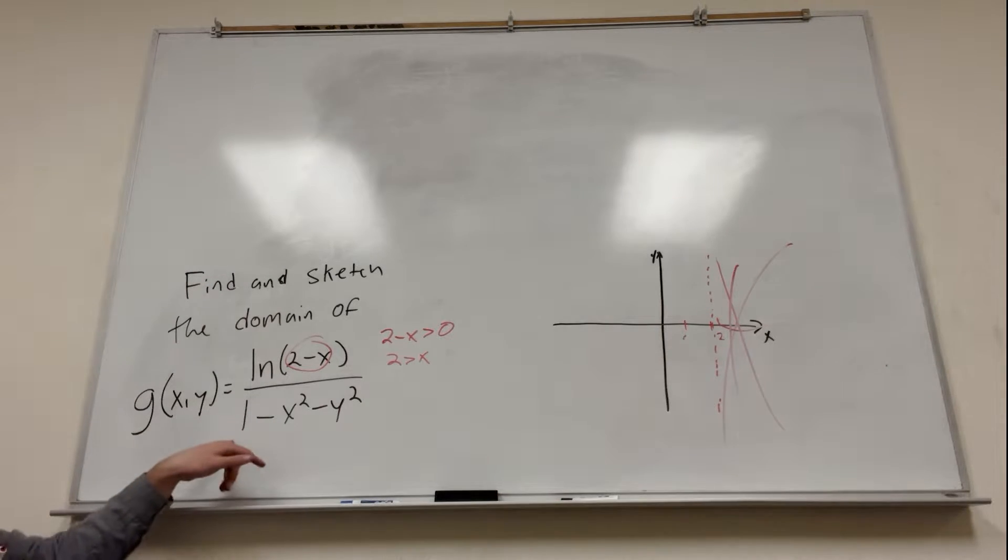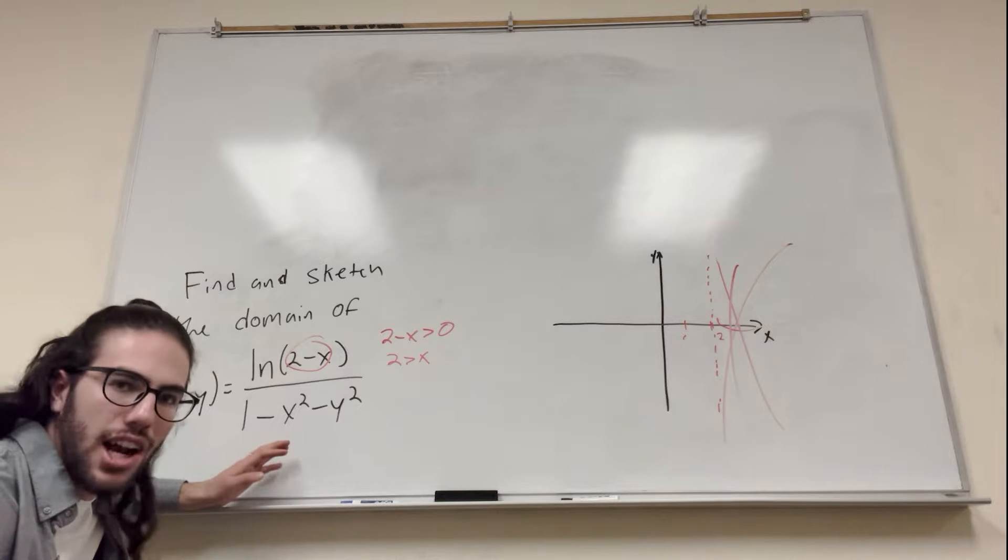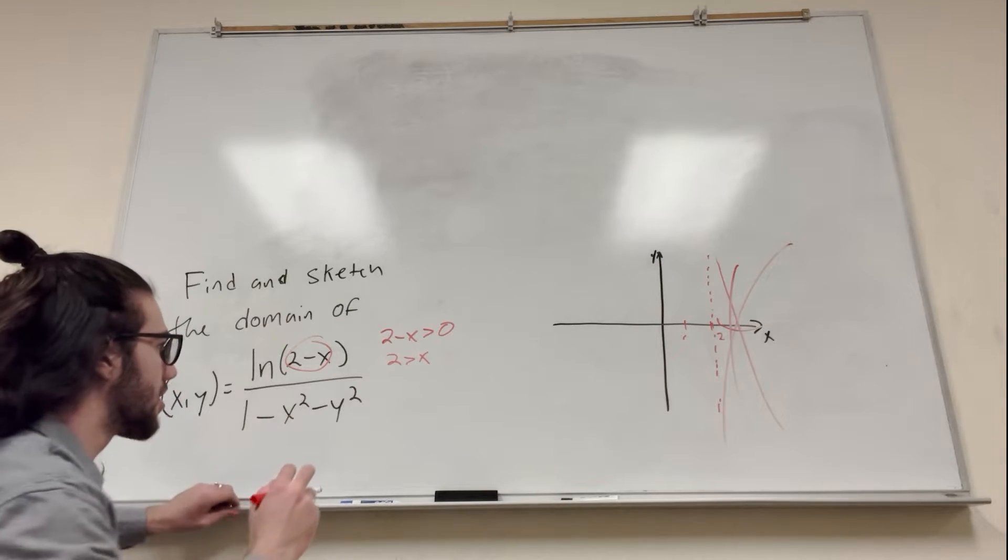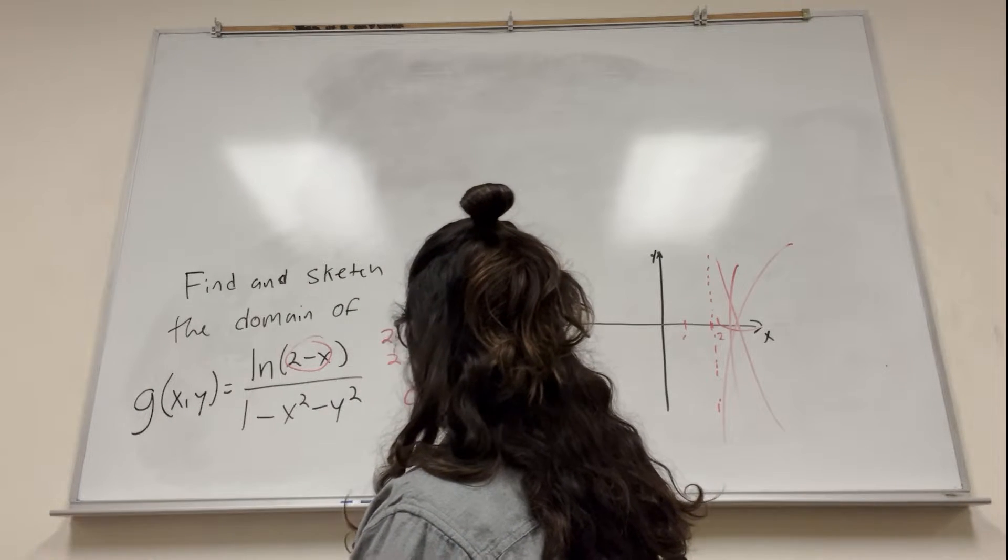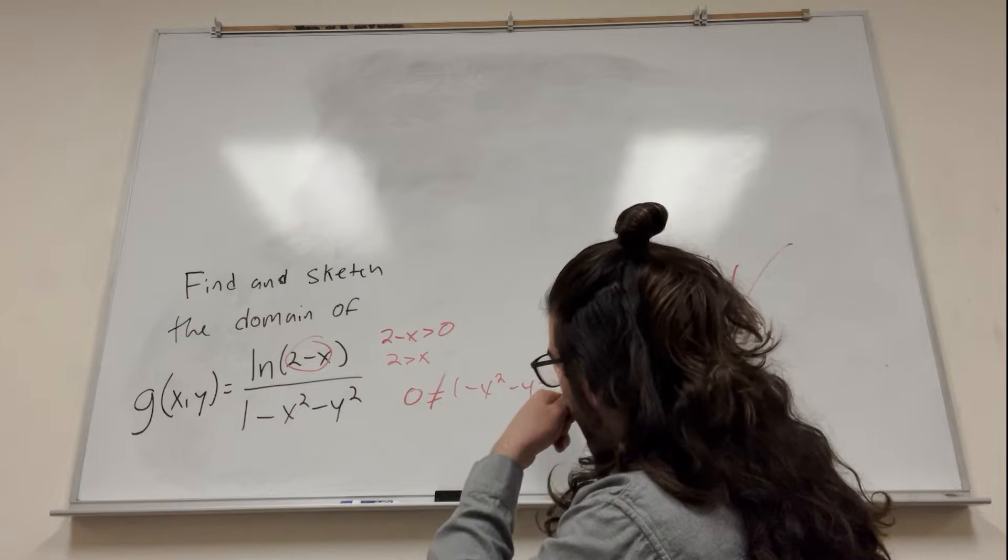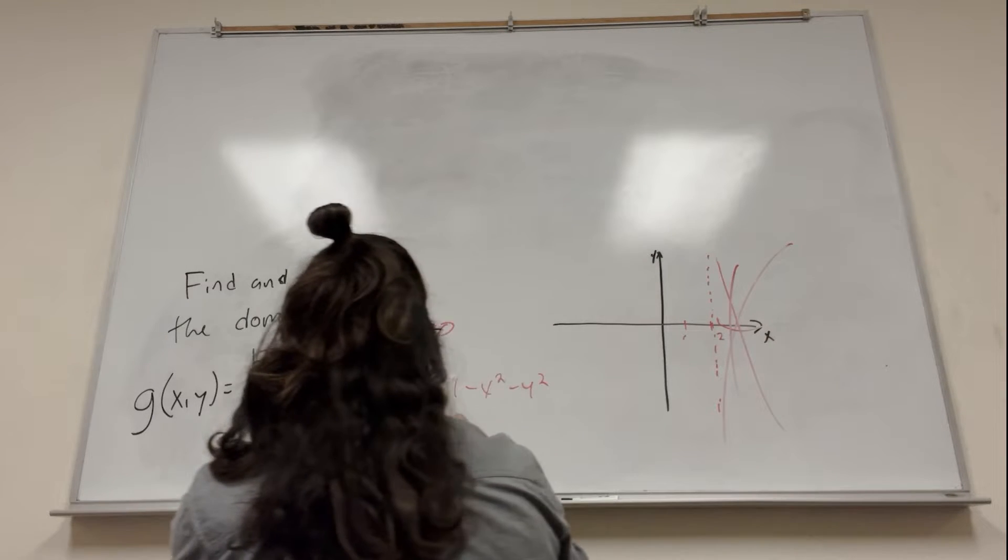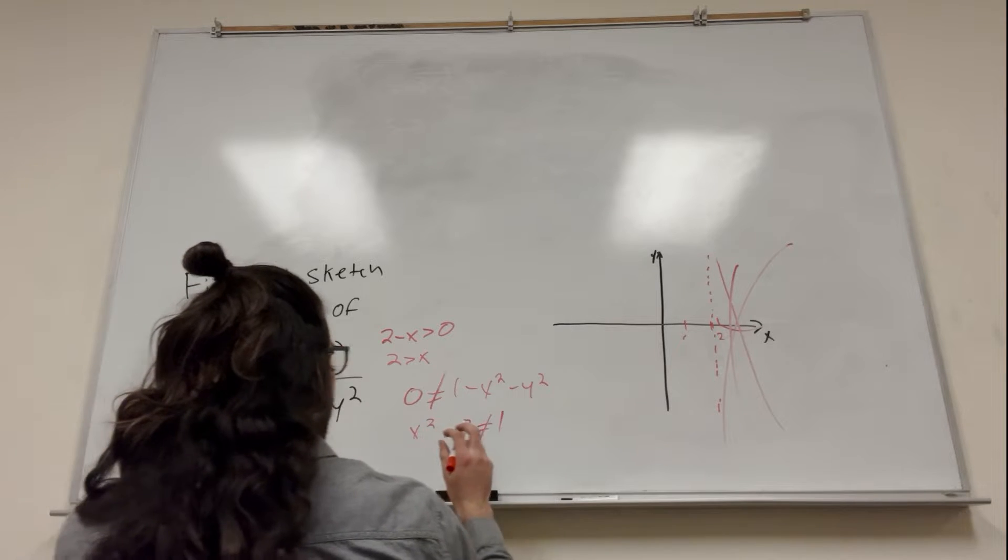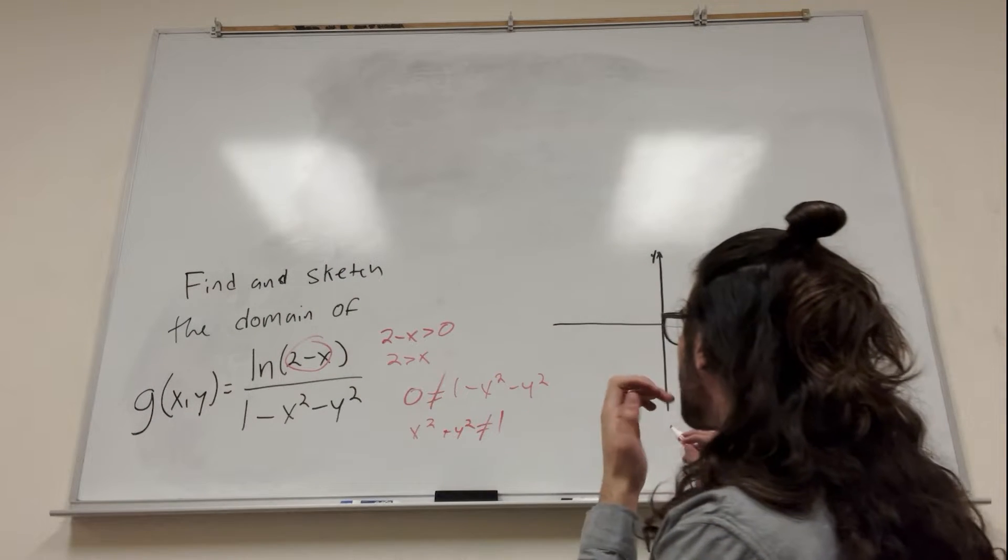Alright, so now we look at the other side. We have 1 over all of this, and what you know is that the denominator cannot equal 0. You cannot divide by 0. So this has to not equal 0. So 0 is not equal to 1 minus x squared minus y squared. So you can move all this to the other side and get x squared plus y squared is not equal to 1.